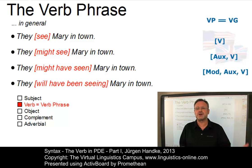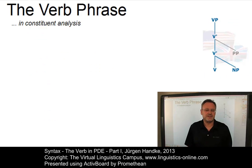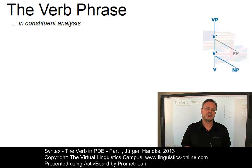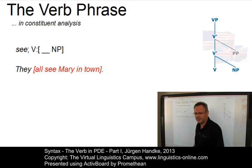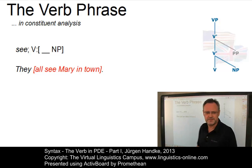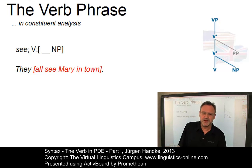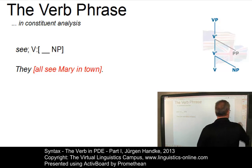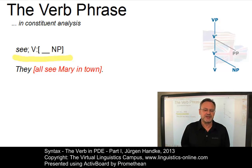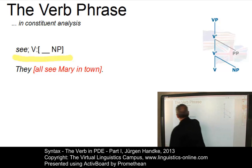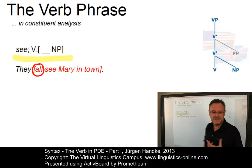A more general view is used in more formal approaches to syntax, for example within constituent analysis in the context of generative grammar. Here the verb phrase is a constituent of a sentence that includes the verb itself and all obligatory and optional constituents related to the verb. For example, in the sentence 'They all see Mary in town', the verb phrase is 'all see Mary in town'. It contains the verb, its obligatory complement noun phrase Mary — as shown in the subcategorization frame — the optional adjunct prepositional phrase in town, and an optional specifier all.